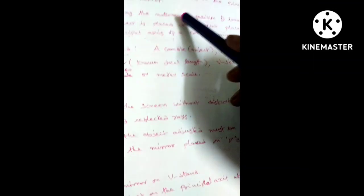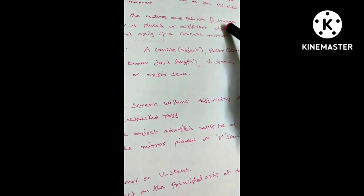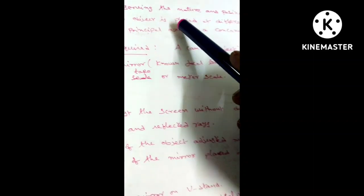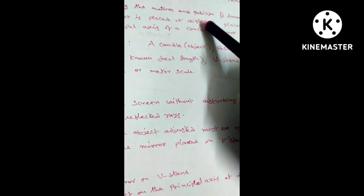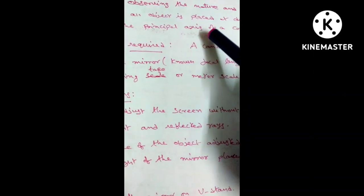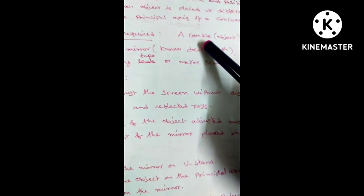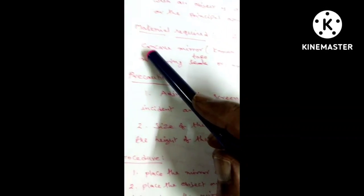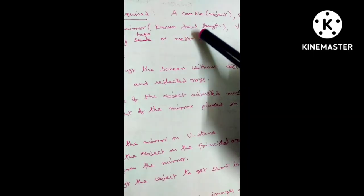Aim: Observing the nature and position of images when an object is placed at different places on the principal axis of a concave mirror. Material required: A candle object, paper screen, concave mirror, known focal length,